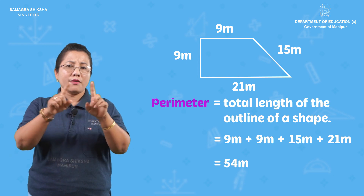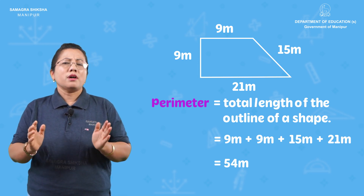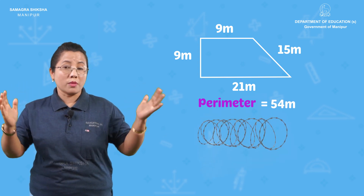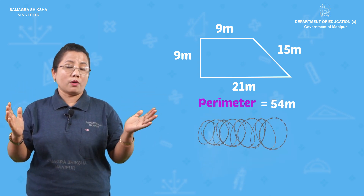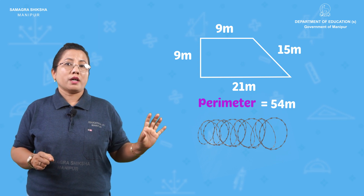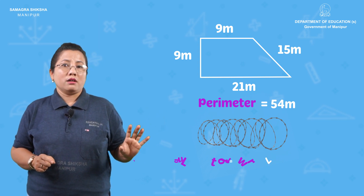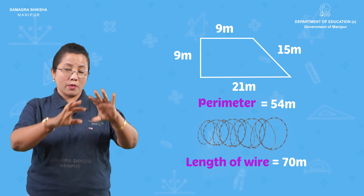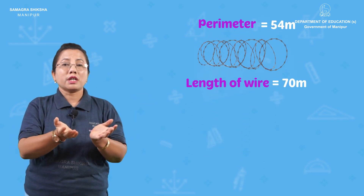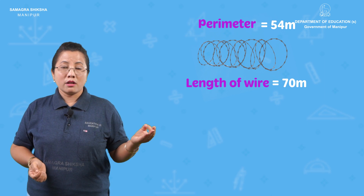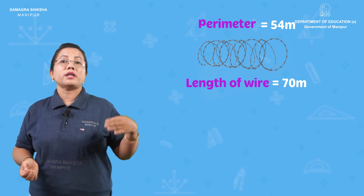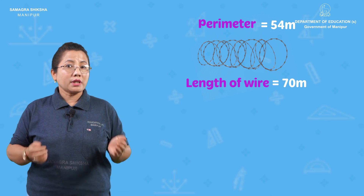The perimeter is 54 meters. The fencing material available is 70 meters long. So we need to compare: the field boundary is 54 meters, and the fencing available is 70 meters.